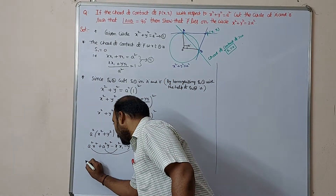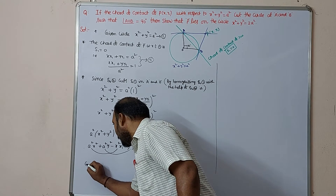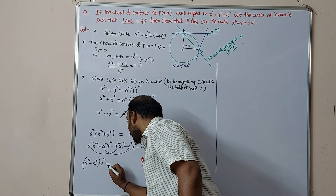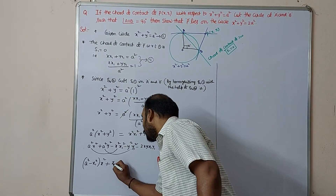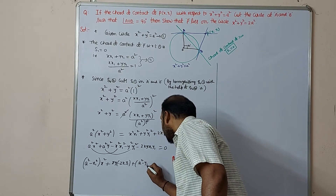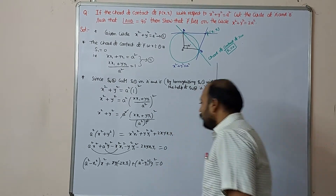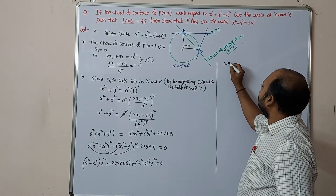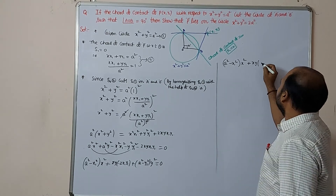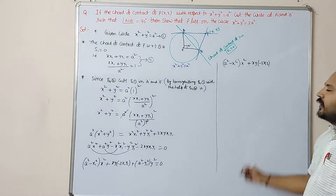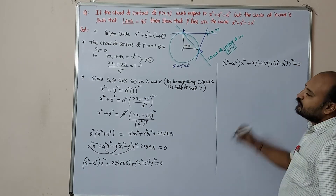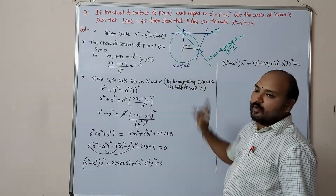Taking out common terms, this can be written as: (a² − x₁²)x² + (−2x₁y₁)xy + (a² − y₁²)y² = 0. This represents the combined equation of lines OA and OB — the pair of lines from the origin through points A and B.